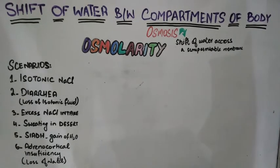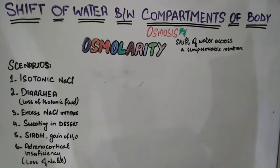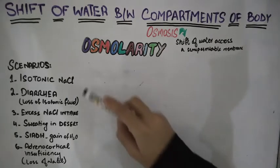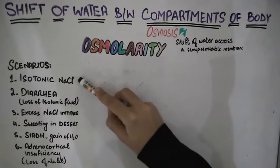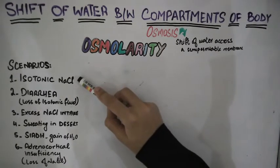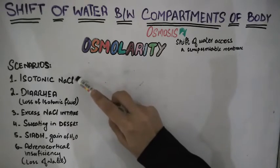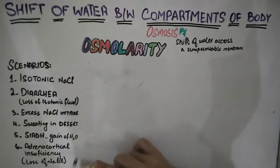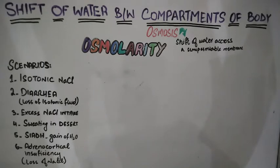In this video we are going to discuss the shift of water between compartments of the body — that is the extracellular fluid and the intracellular fluid — and how the shift occurs and how it affects the volume of extracellular fluid and intracellular fluid in six scenarios explained in the book BRS Physiology.